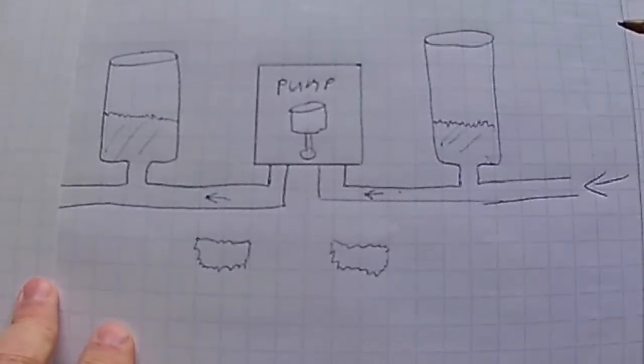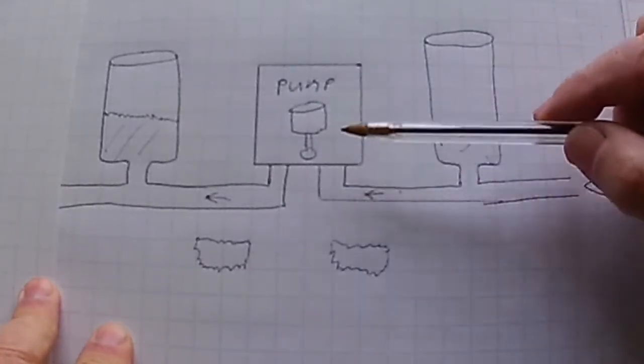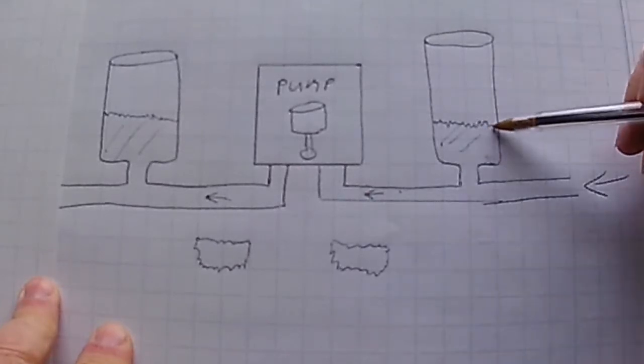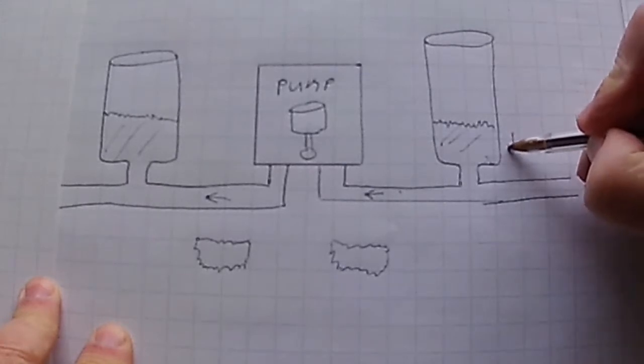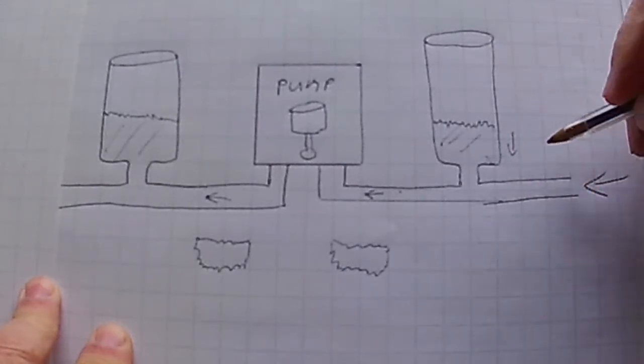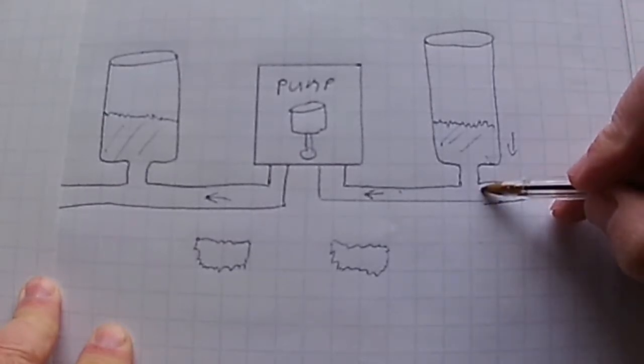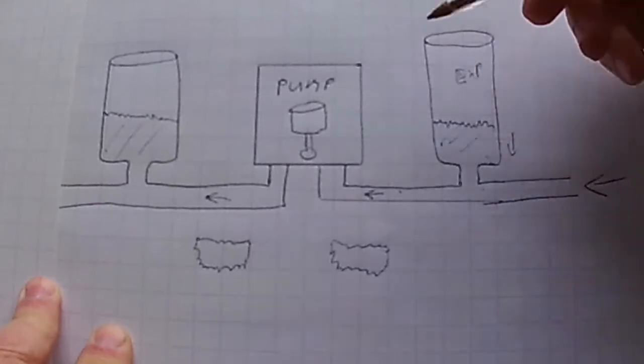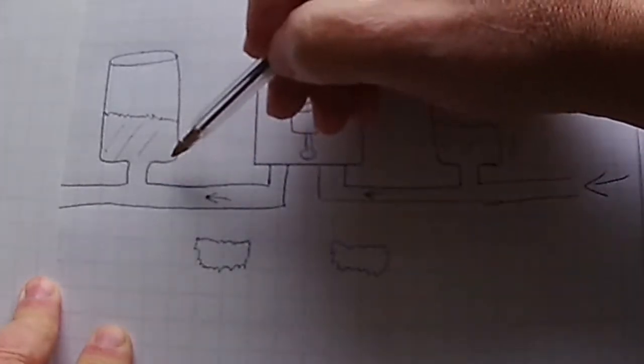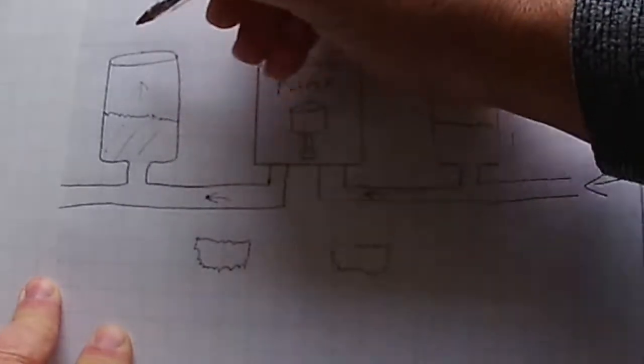Now you cannot compress liquid but you can compress air. So let's look at that again. The pump sucks fuel in and what happens is any fuel in here will drop momentarily and also add to the input, and the air in here will be expanded. On the opposite, when it pumps out it will try and compress the air in here because you can compress air.